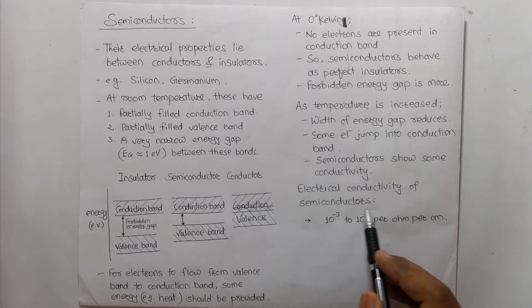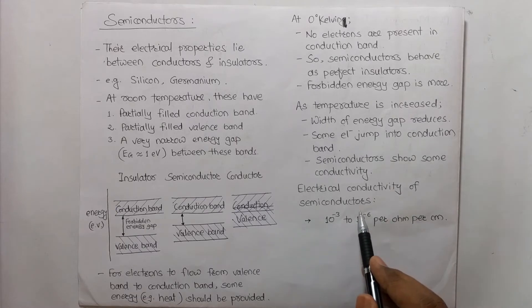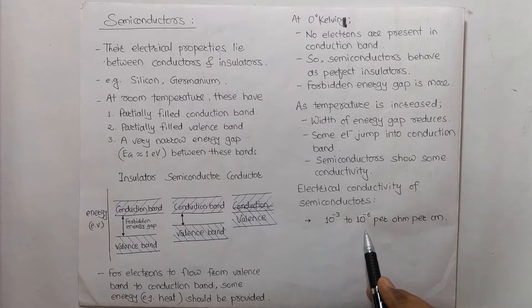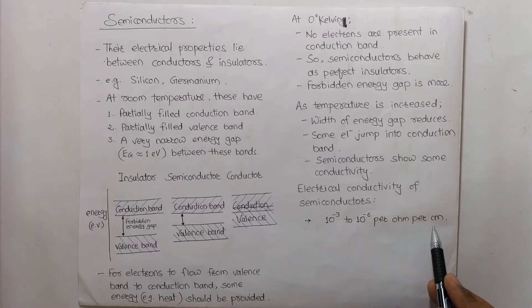The electrical conductivity of semiconductors is in the range of 10 raised to minus 3 to 10 raised to minus 6 per ohm per centimeter.